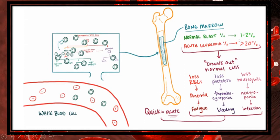The normal percentage of blasts is zero to one or two percent, while in acute leukemia the percentage is greater than 20 percent. When all these blast cells build up, they crowd out the normal cell differentiation. As a result, you lose the cells normally produced in bone marrow — loss of red blood cells leads to anemia with fatigue, loss of platelets leads to thrombocytopenia with bleeding problems, and loss of neutrophils leads to neutropenia and increased infections. Symptoms come about relatively quickly, which is why we call it acute leukemia.